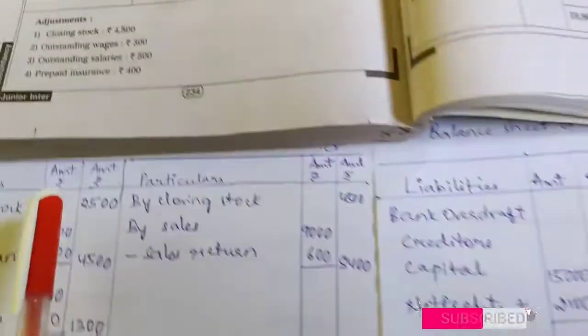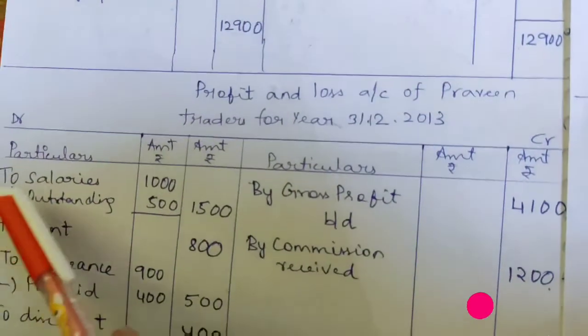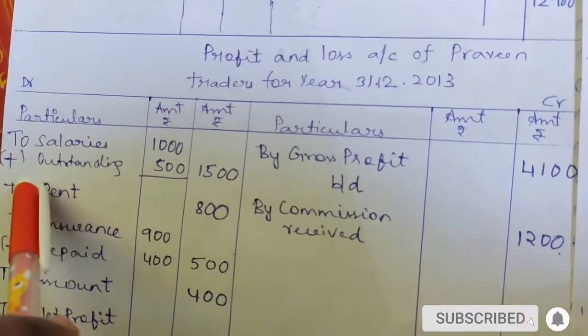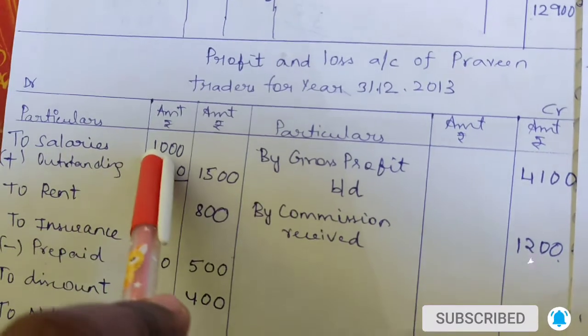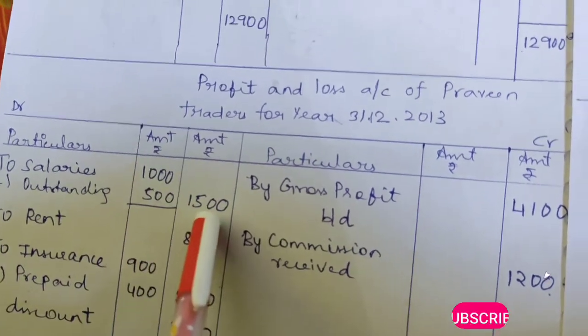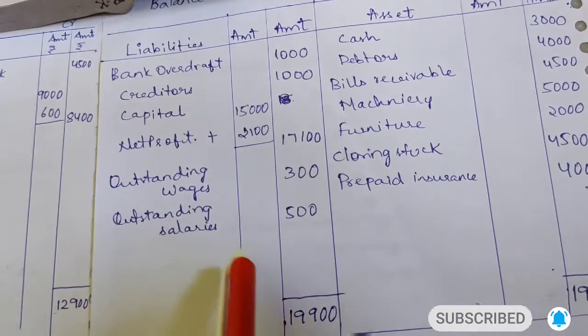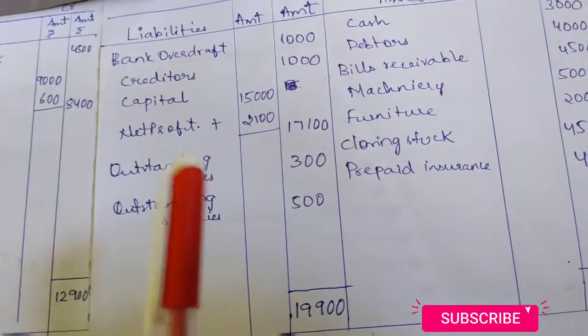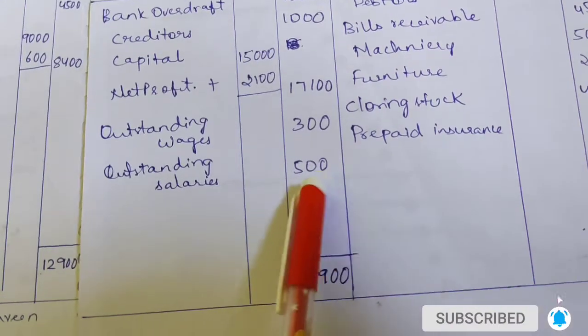Next adjustment: outstanding salary 500. Since salary has an outstanding amount, we add it: 1,000 plus 500 equals 1,500. The outstanding salary 500 goes second time to the liability side of the balance sheet as outstanding salaries.